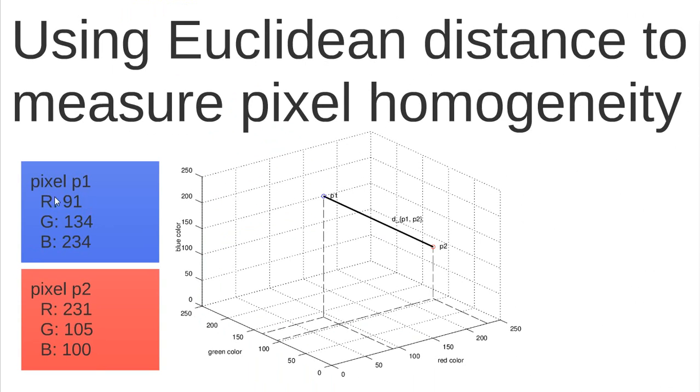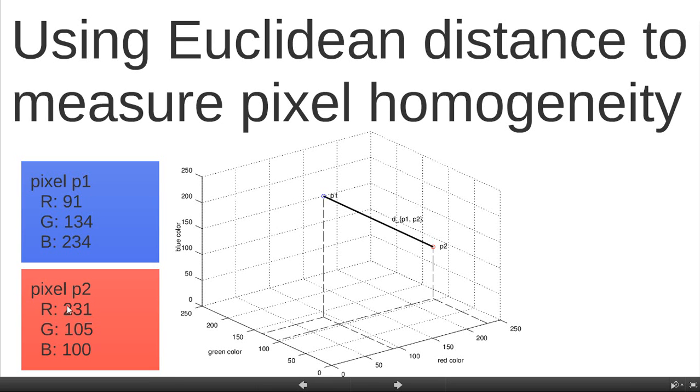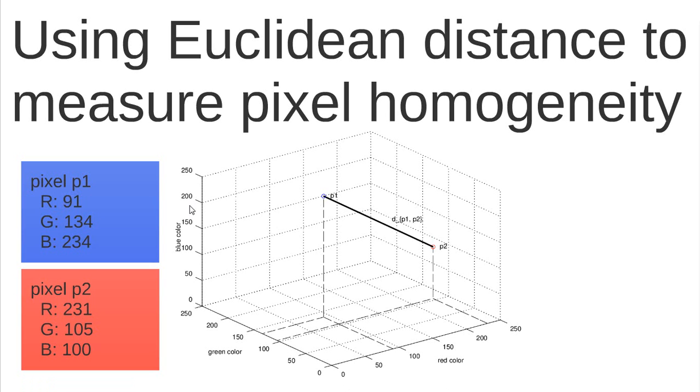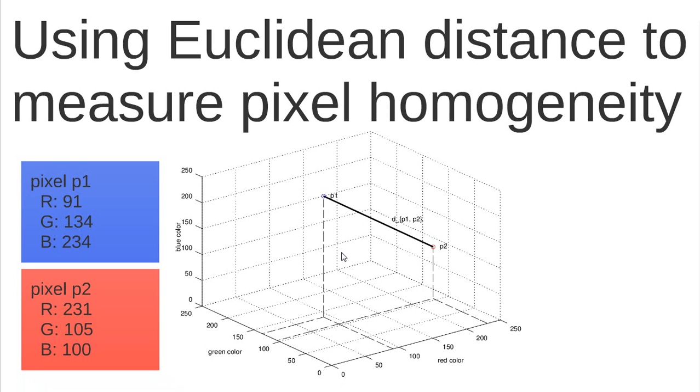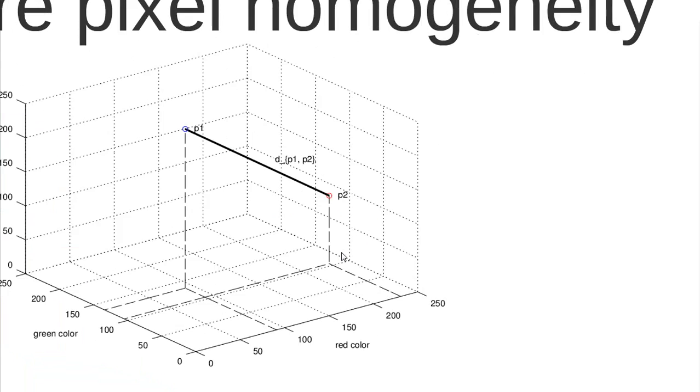Suppose that we have two pixels, a pixel P1 with the following RGB values and also pixel P2 with these following pixel values. So we plotted here the scatter plot of these three bands considering these two pixels. The pixel P1 is here in this feature space and pixel P2 is here in this feature space. So we are going to use the Euclidean distance to measure if these two pixels are homogeneous or not.